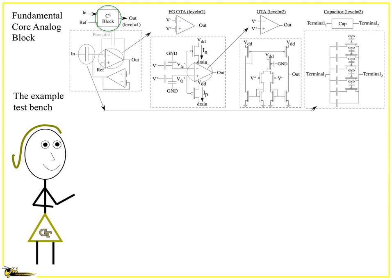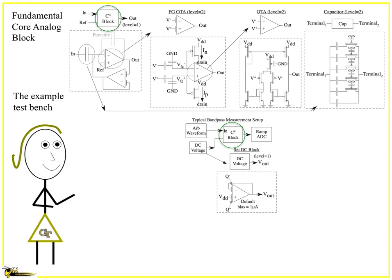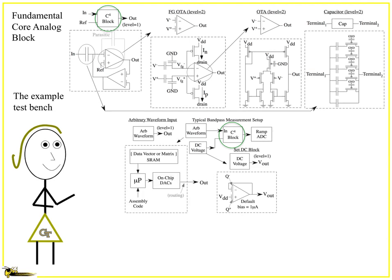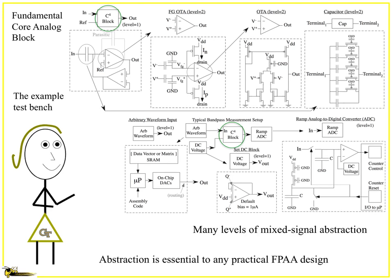When you look at the test bench, here's your typical setup — there's that simple bandpass filter block. There's a DC bias element, which takes another floating-gate OTA. The arbitrary waveform generator actually uses the microprocessor, a whole bunch of on-chip DACs, and a bunch of routing. All of this gets routed together from a vector you might have had in your high-level tools. The ramp ADC is a whole other set of compiled circuits with another OTA, switch fabric elements, routing elements, and interrupts driven into the processor. There are a lot of levels of abstraction — this is mixed signal, but it's driven heavily by the fact that the analog can be abstracted, essential to any practical FPA design.